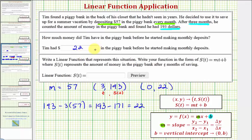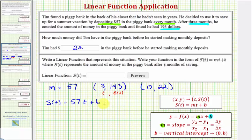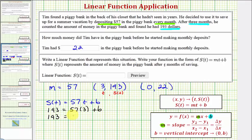We could also answer this question using the equation of our linear function. A linear function S of T would be in the form S of T equals 57 times T plus B, where B is the starting amount, or the function value when T equals zero. Using the ordered pair (3, 193), we substitute 193 for S of T and three for T, giving us 193 equals 57 times three plus B. Solving, we have 193 equals 171 plus B. Subtracting 171 from both sides, we get the same value: B equals 22.